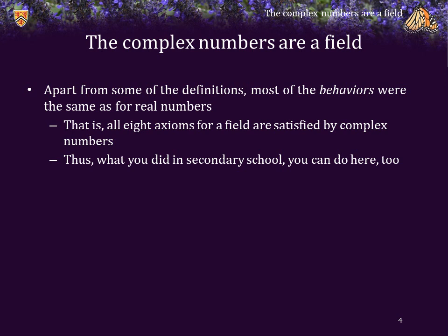Apart from some of the definitions of how these operations work, most of the behaviours are more or less the same as those for the reals. All eight axioms for a field are satisfied by the complex numbers. Both addition and multiplication are commutative. Both addition and multiplication are associative. There's an additive identity and a multiplicative identity. Every complex number has an additive inverse. Every non-zero complex number has a multiplicative inverse. And multiplication distributes over addition.